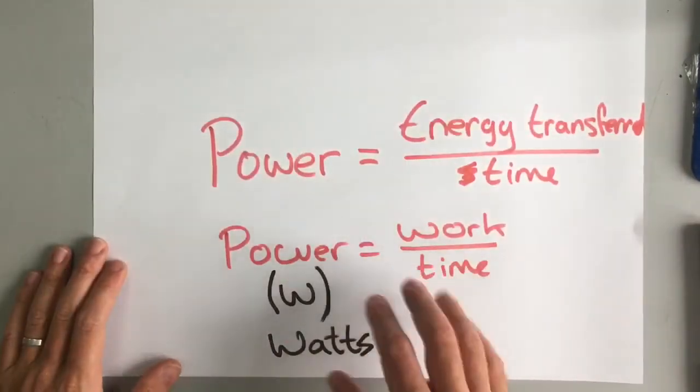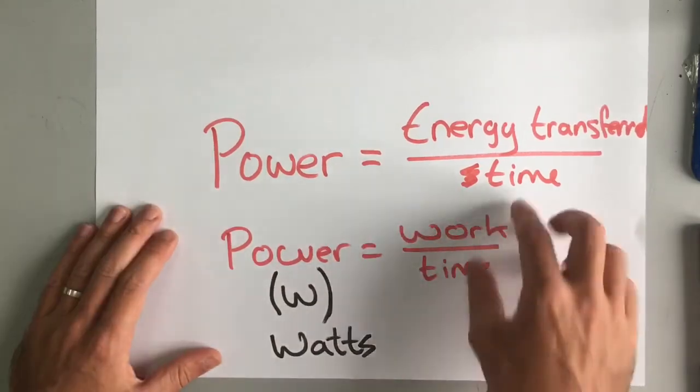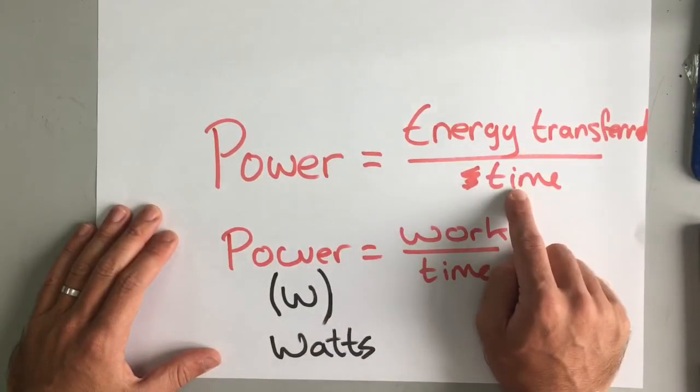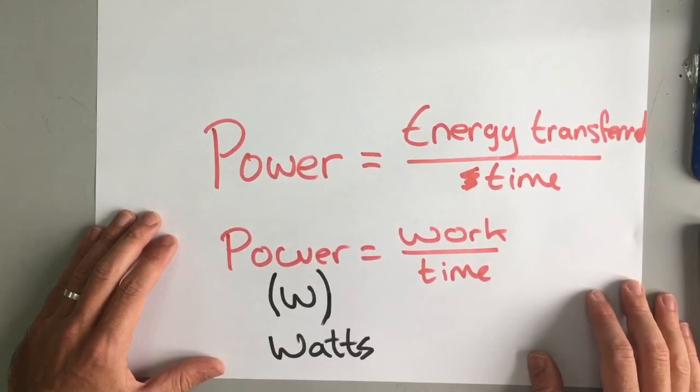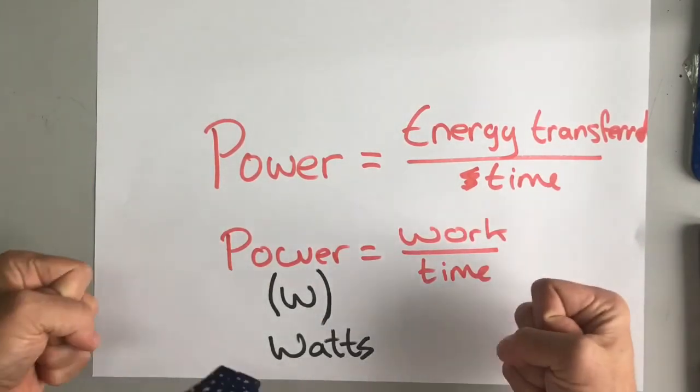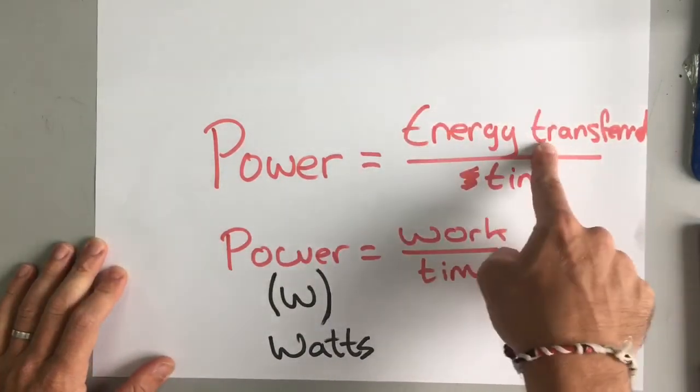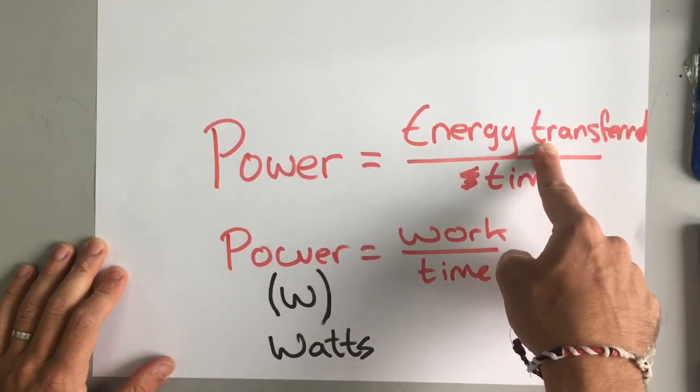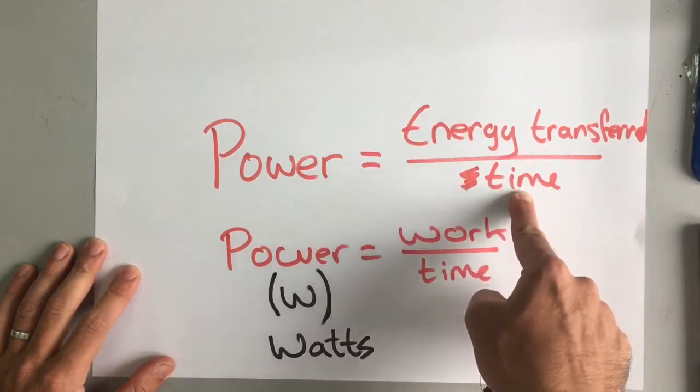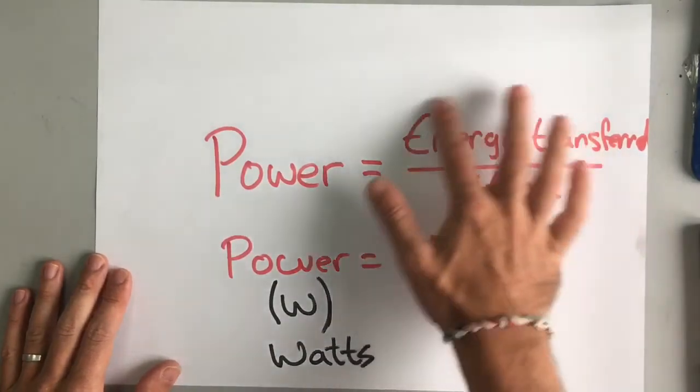So if we're talking about, for example, a powerful car, the powerful car transfers more energy per second than a not so powerful car. And that makes sense. A powerful car, we think, yeah, it can go really fast. It can accelerate really quickly. And that means that more chemical energy is transferred into kinetic energy in one second. So the car goes faster.